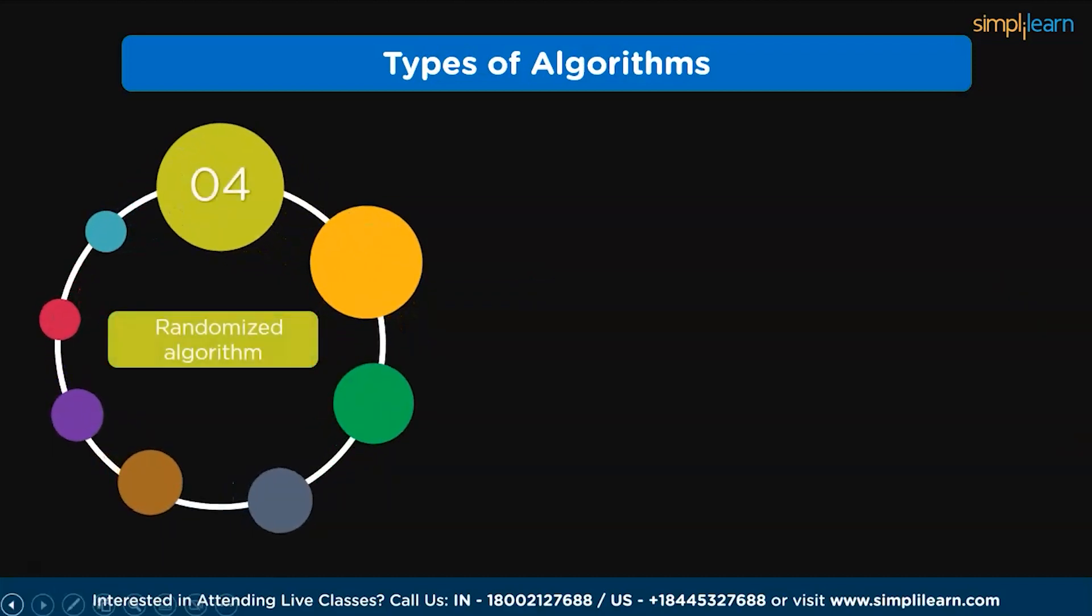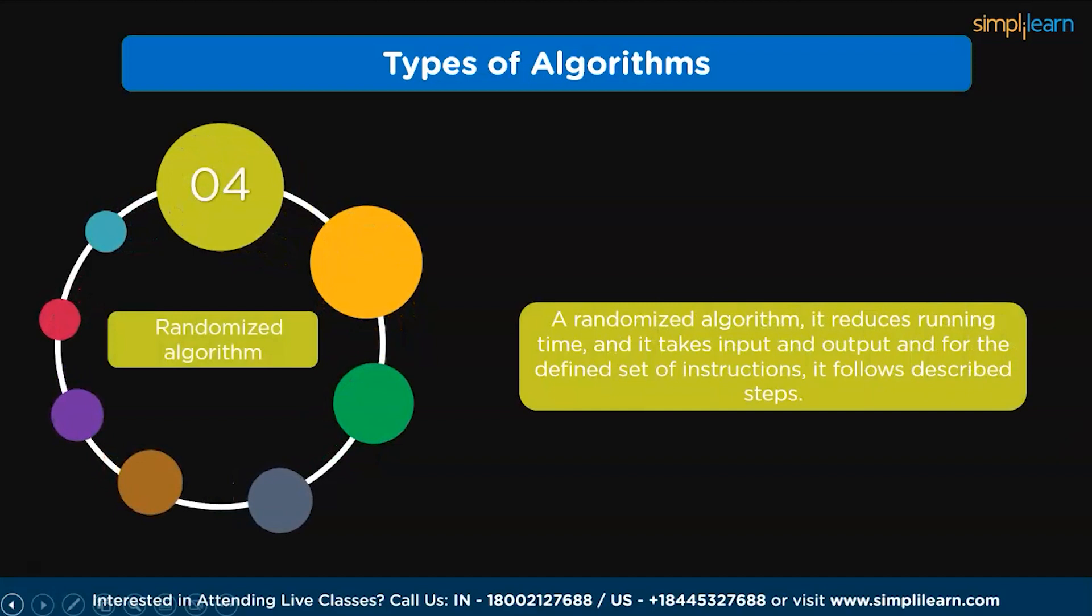Then, randomized algorithm. This algorithm reduces running time and it takes input and output and for the defined set of instructions, it follows described steps. This algorithm uses a random number to get the expected result.